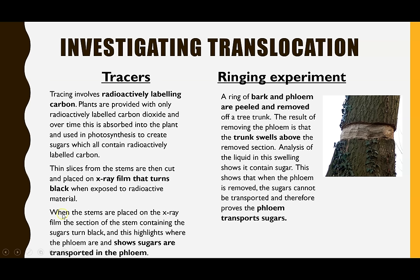You could also place a whole stem on the x-ray film, and the area where the phloem is would be highlighted by the radioactive sugars, turning black on the film — proving that it is the phloem where the sugars are being transported.